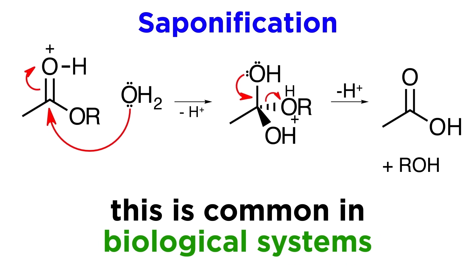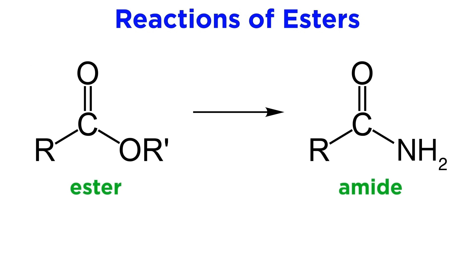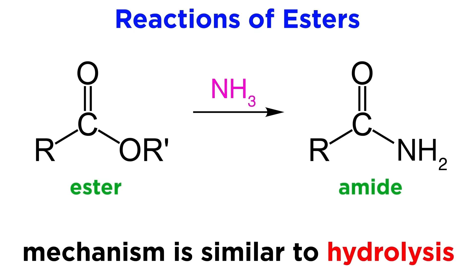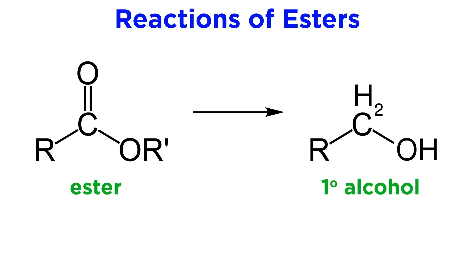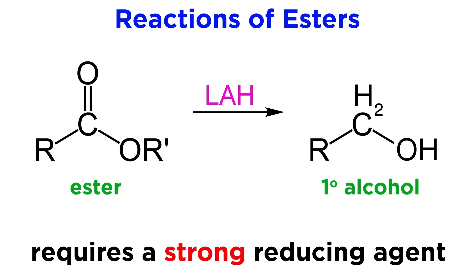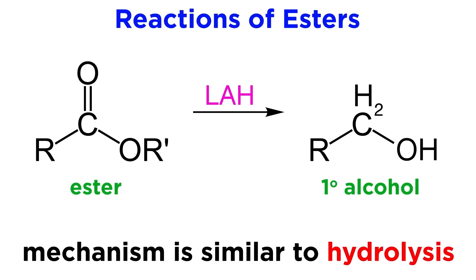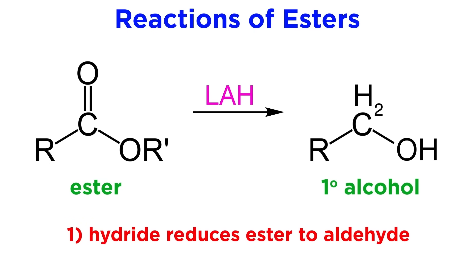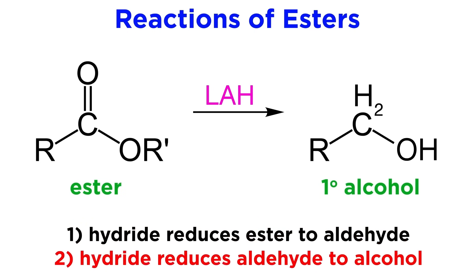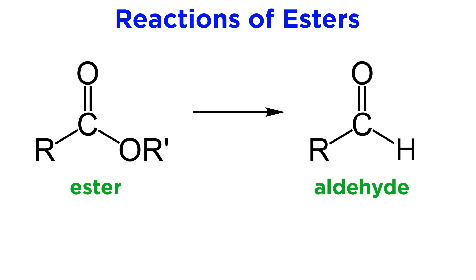This sort of chemistry is common in biological systems. Next, esters can be converted into amides. This can be done with ammonia or some other amine, and will occur similarly to hydrolysis. Esters can also be reduced all the way to the primary alcohol, which will require a strong reducing agent like lithium aluminum hydride. Mechanistically, this is essentially the same as base-catalyzed hydrolysis — it is simply a hydride that is attacking instead of hydroxide. Once the aldehyde is produced, further reduction yields the primary alcohol. Esters can also be reduced to the aldehyde and stop if special reducing agents are used, like DIBAL-H.